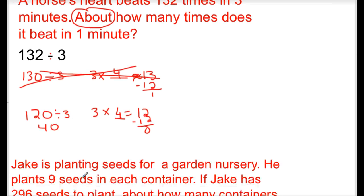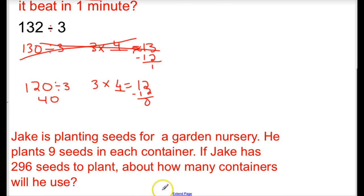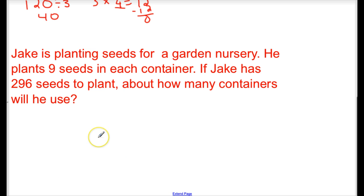Now, we have another problem that we're going to work on solving together. Jake is planting seeds for a garden nursery. He plants 9 seeds in each container. If Jake has 296 seeds to plant, about how many containers will he use? We're going to know that we're estimating, and our division is going to be 296 divided by 9. We're looking at this number, 296, our dividend, and we can clearly see that it is not compatible with 9.